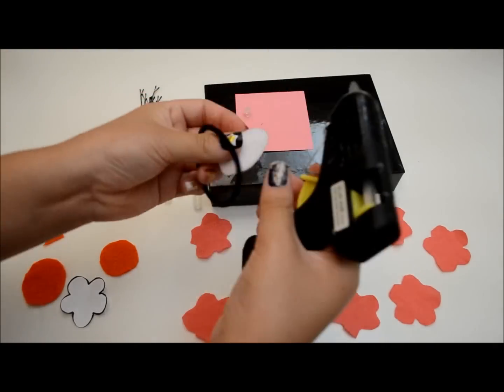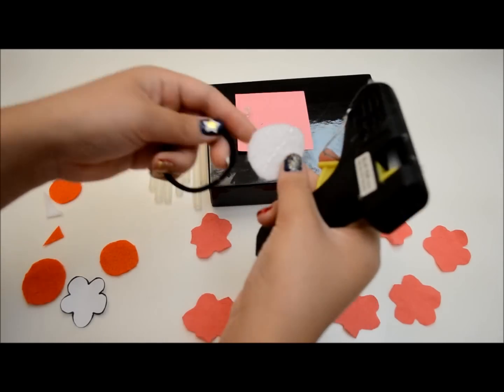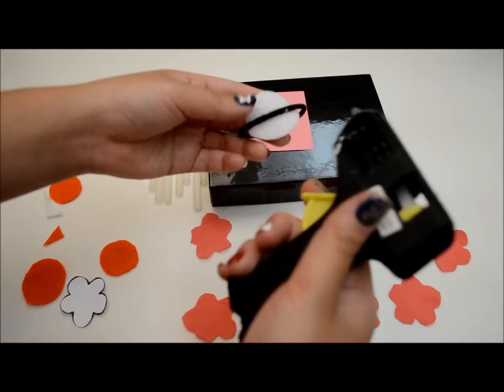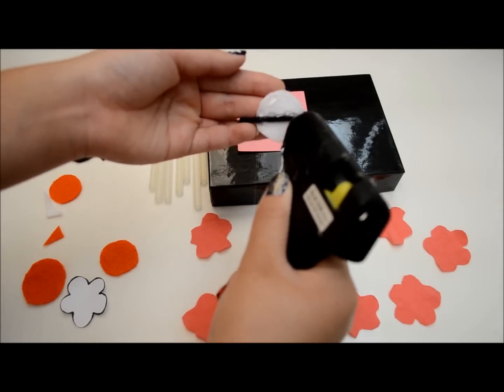If you want to make a flower hair tie, just cut out 2 felt circles instead of a circle and a triangle and glue them as shown in the video.